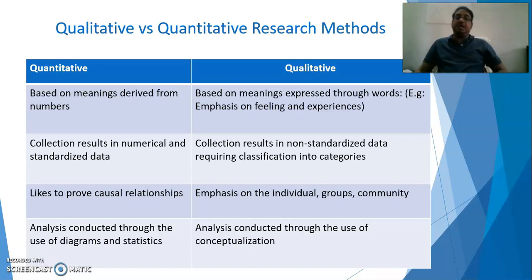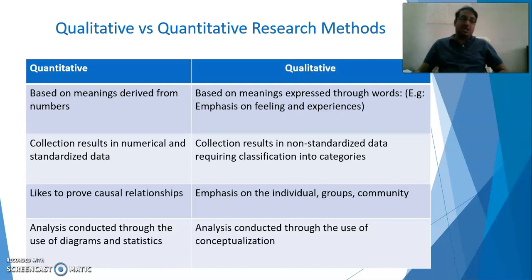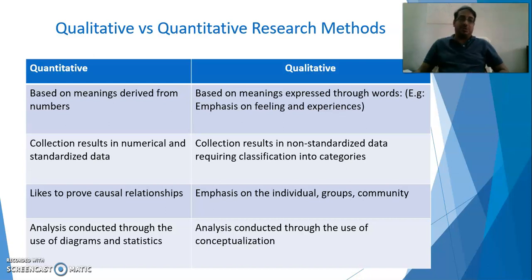Quantitative research methods like to prove causal relationships — they test hypotheses. For example, there is a relationship between X and Y, or there is the impact of A on B. So quantitative research looks for and tests causal relationships.